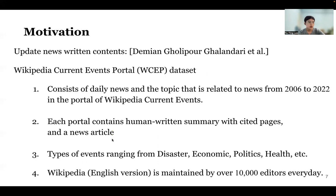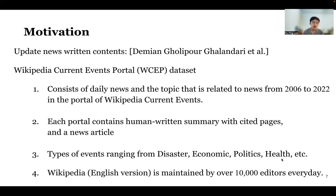To construct our data, we crawled and parsed daily news from the Wikipedia current events portal, ranging from 2006 to 2022. Each portal contains cited pages and a news article. The types of events cover many categories ranging from disaster, economic, politics, and health, among others. Like the WCP10 dataset, we only keep the English language summary in our data.